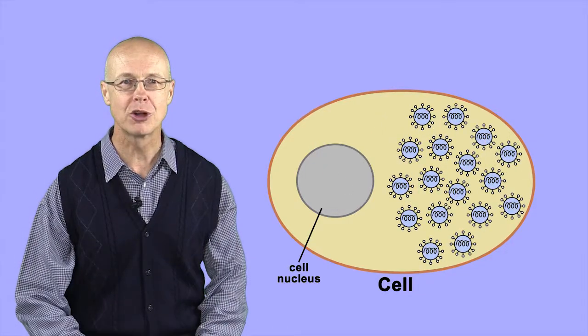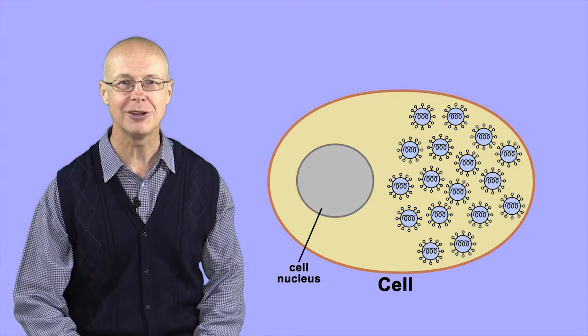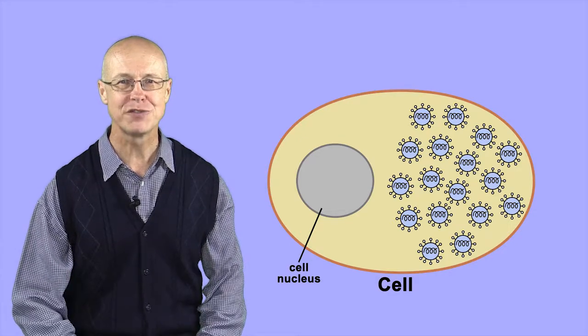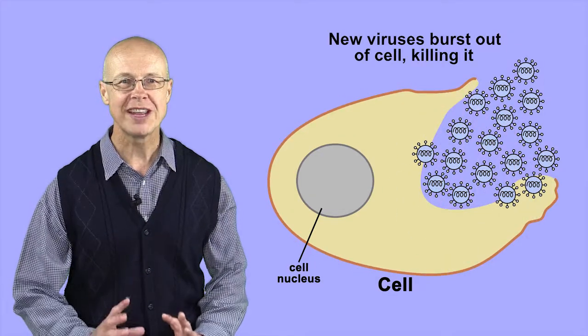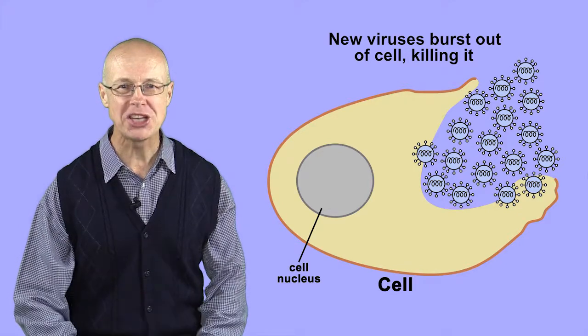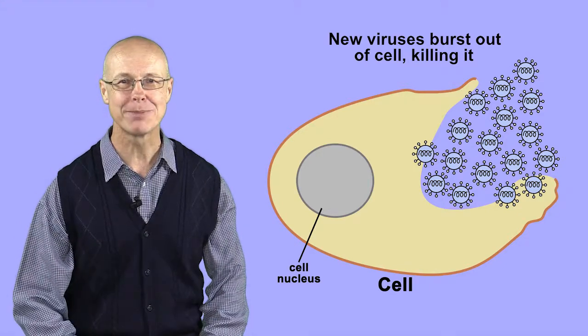Enough of these viral components are produced by the cell to assemble hundreds of new viruses, which are then released, often bursting out of the cell, killing it in the process.